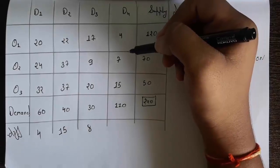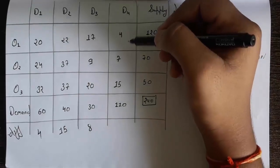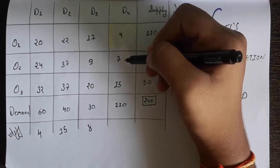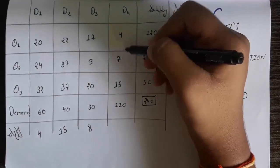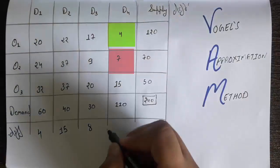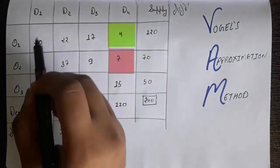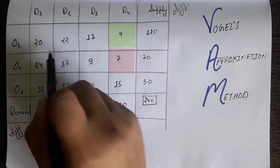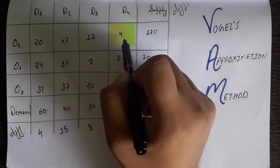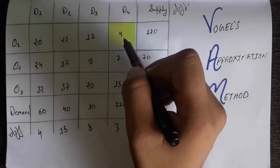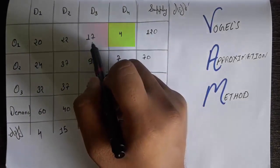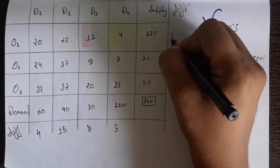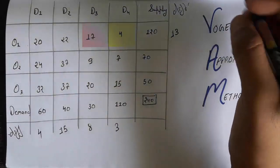In the D4 column, among 4, 7, and 15, the smallest number is 4 and the next number is 7, so 7 minus 4 gives a difference of 3. Now do the same for the rows. In row O1, the smallest number is 4 and the number before that is 17, so the difference is 17 minus 4, which equals 13.